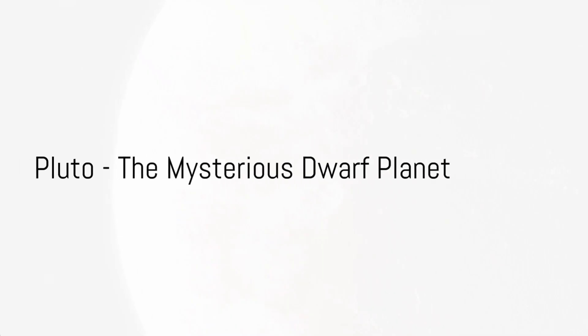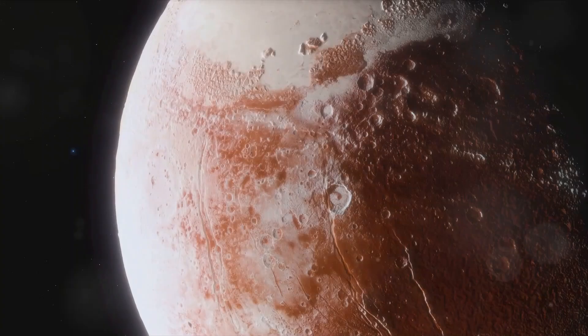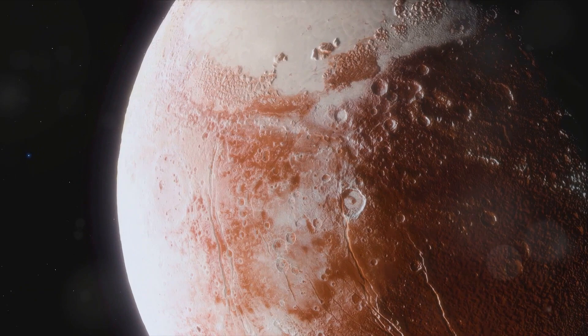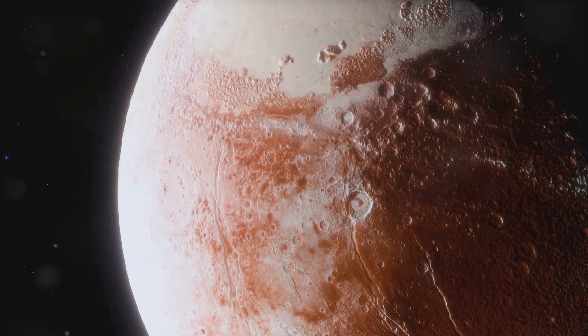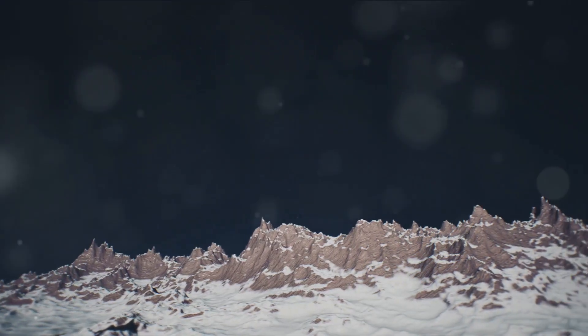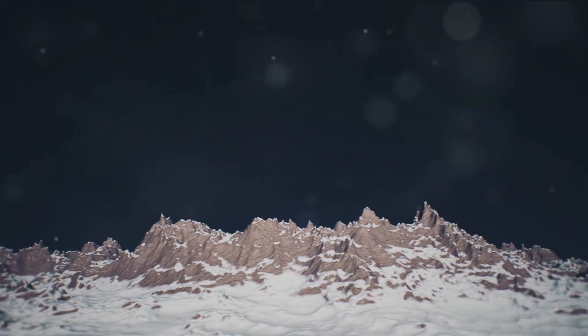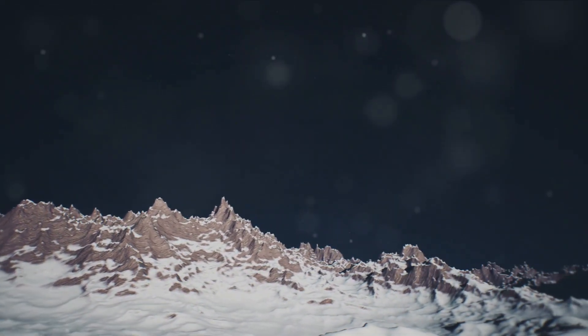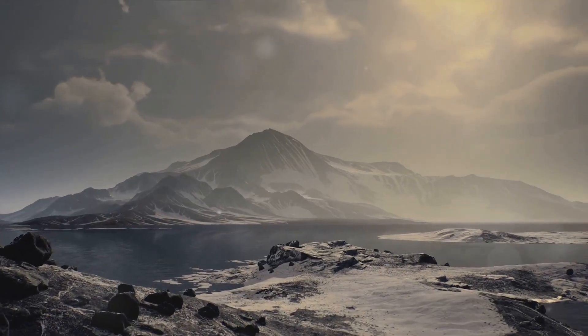Finally we reach Pluto, once the ninth planet, now classified as a dwarf planet residing in the Kuiper Belt. With a heart-shaped glacier on its surface, Pluto is a mysterious world of ice and rock located about 3.67 billion miles from the sun.